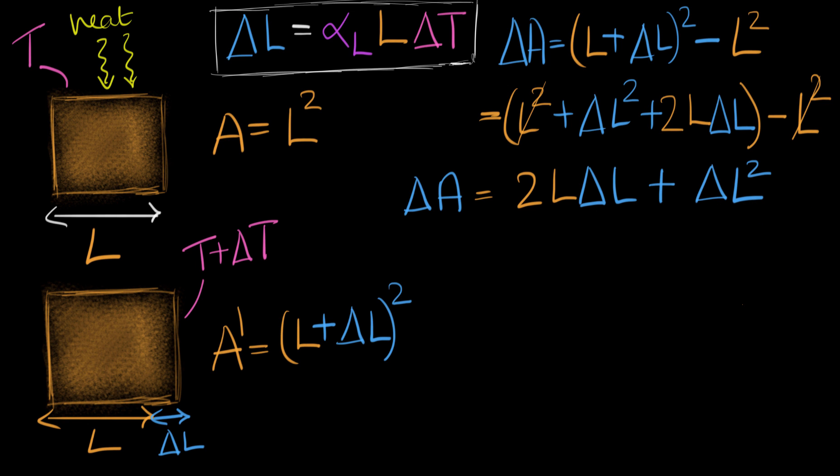Can you see that L delta L is going to be a much larger quantity compared to delta L squared? Let me give you an example. Let's say L is something like 100. Then delta L would be something like 0.1. So in that case, 100 times 0.1, well, this term, forget about the two, I'm just kidding about this term. That would be just 10. Well, this would be 0.1 squared. That would be 0.01.